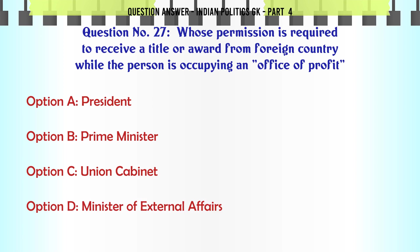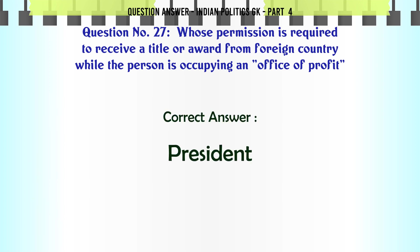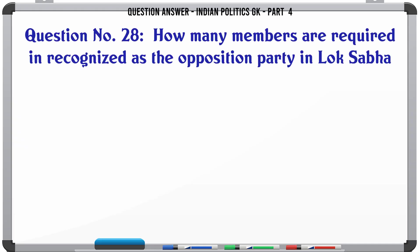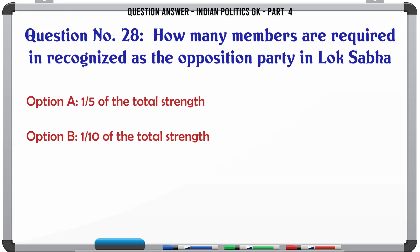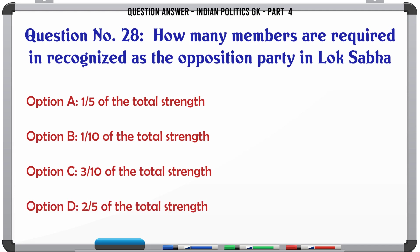Whose permission is required to receive a title or award from a foreign country while the person is occupying an Office of Profit? A. President. B. Prime Minister. C. Union Cabinet. D. Minister of External Affairs. The correct answer is President.